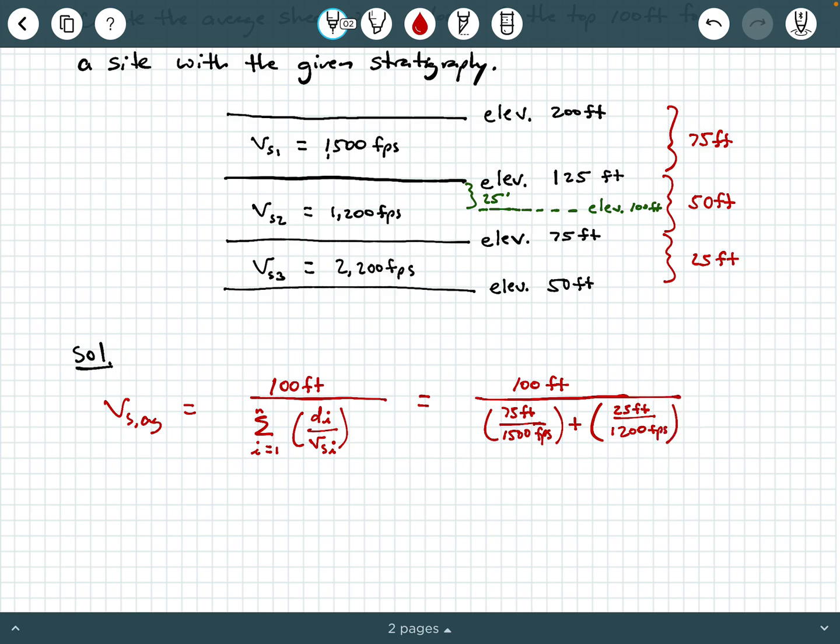So you got to be careful because this other 25 feet that is part of the second layer is not within the top 100 feet. And then definitely this third layer down here is not within the top 100 feet.